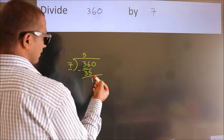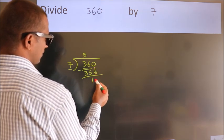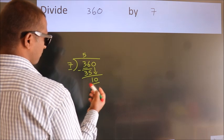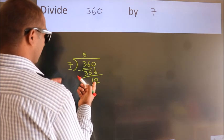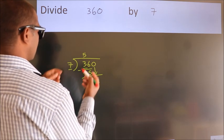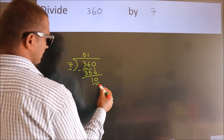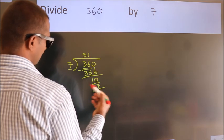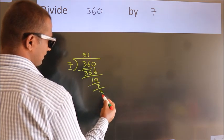After this, bring down the beside number. So, 0 down. So, 10. A number close to 10 in 7 table is 7 once 7. Now, we subtract. We get 3.